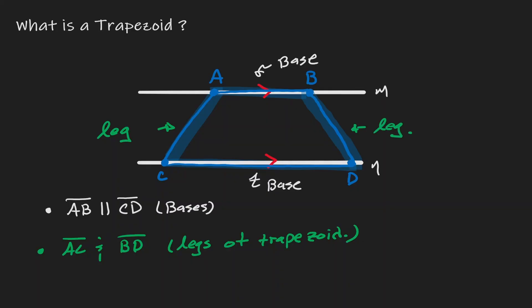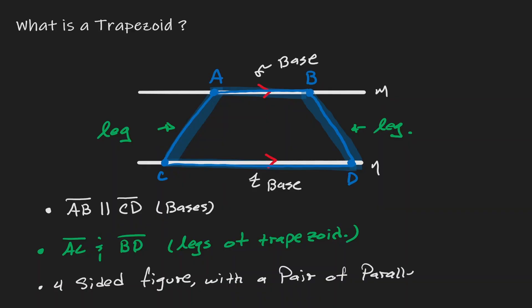And this is how we are going to define a trapezoid. A trapezoid is a four-sided figure where there is a pair of parallel segments — in this case, AB and CD. One thing to notice is that this is not a parallelogram. The reason is that AC is not parallel to BD. So therefore, all those properties of a parallelogram cannot be used in a trapezoid.